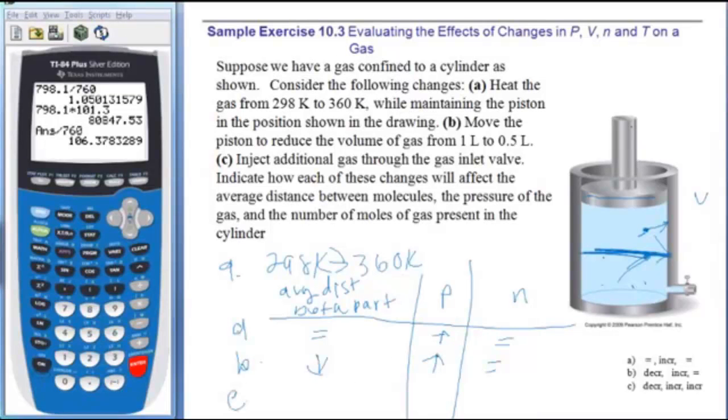And for C, it says inject additional gas with the inlet. So if I just inject more gas, I got the same amount of space and I am adding a whole bunch more particles, the distance between the particles will go down. The number of particles will go up. And if I have more particles per area or per volume, I'm going to get more collisions and therefore more pressure.